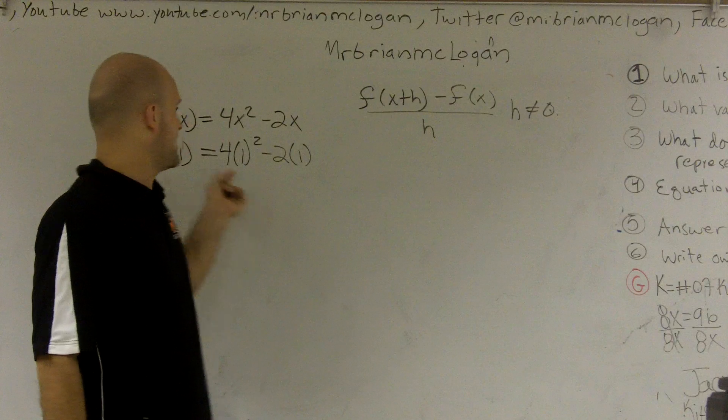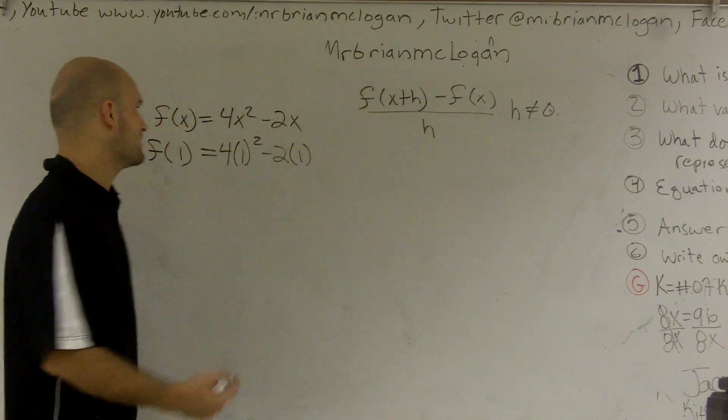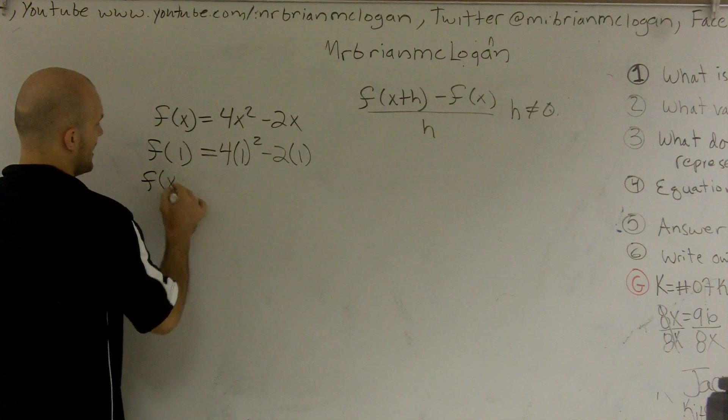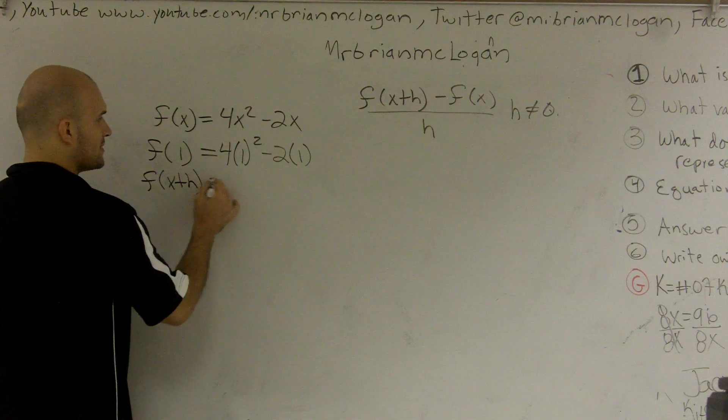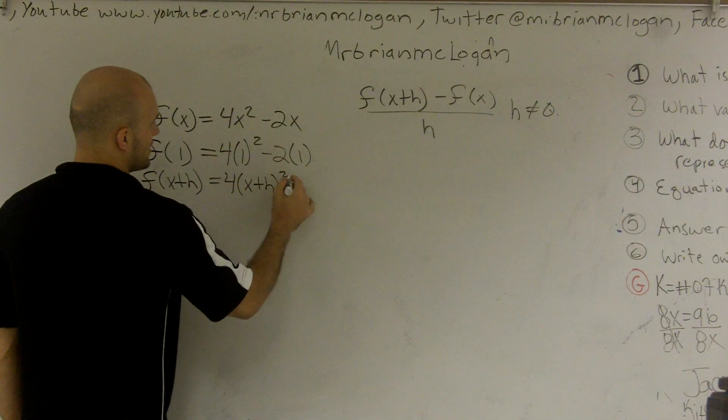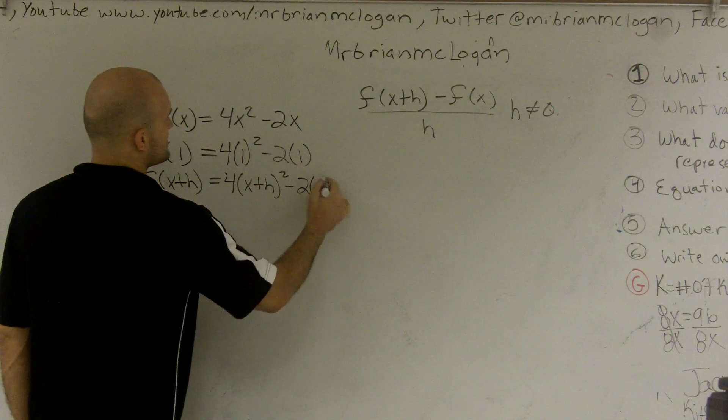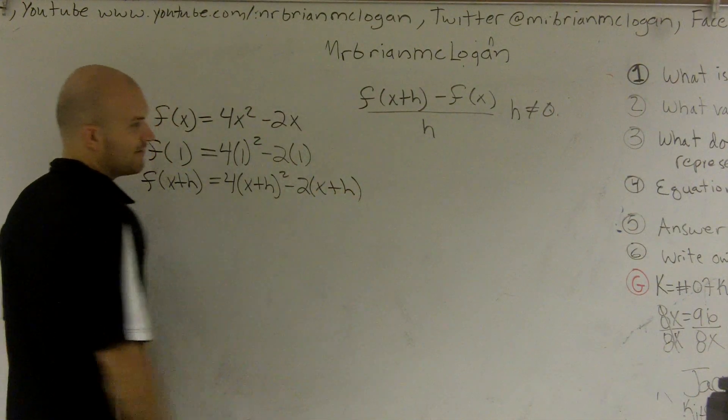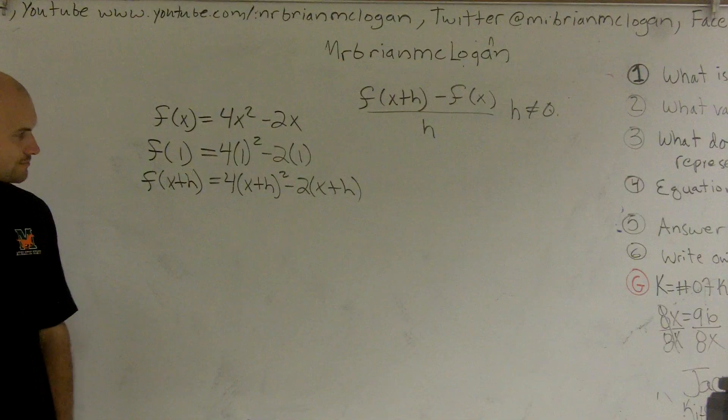They're saying, well, rather than evaluating for f of 1, they want me to evaluate for f of (x+h). So I'm going to do the same thing. I'm going to multiply (x+h) squared minus 2 times (x+h). Do you follow? See what I did? Alright.